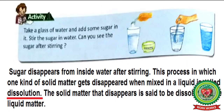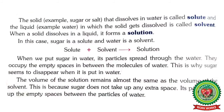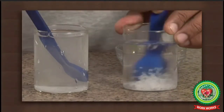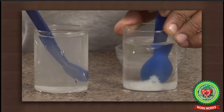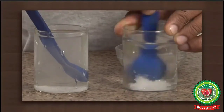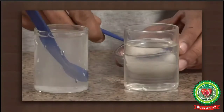The process in which one kind of solid matter disappears when mixed in a liquid is called dissolution, and the solid is said to be dissolved. The solid matter is called solute, and the liquid — for example water — in which the solid gets dissolved is called solvent. When solid dissolves in a liquid it forms a solution. The particles of sugar spread throughout the water and occupy the empty spaces between the water molecules, which is why sugar seems to disappear.